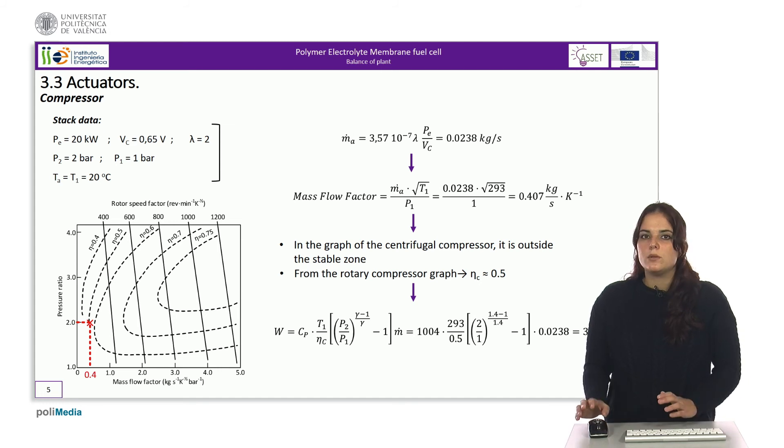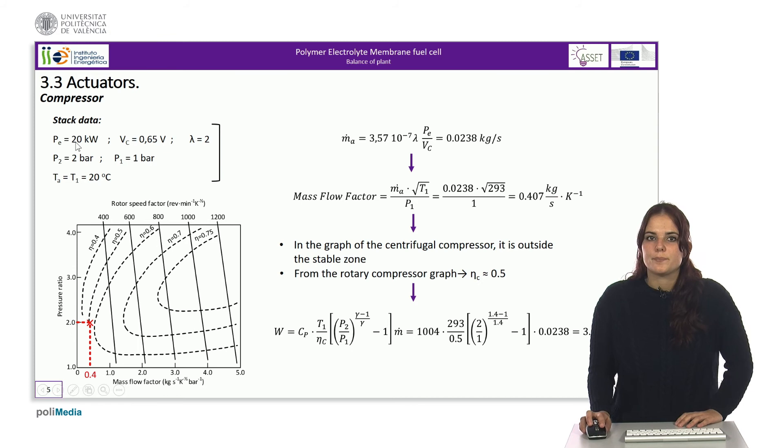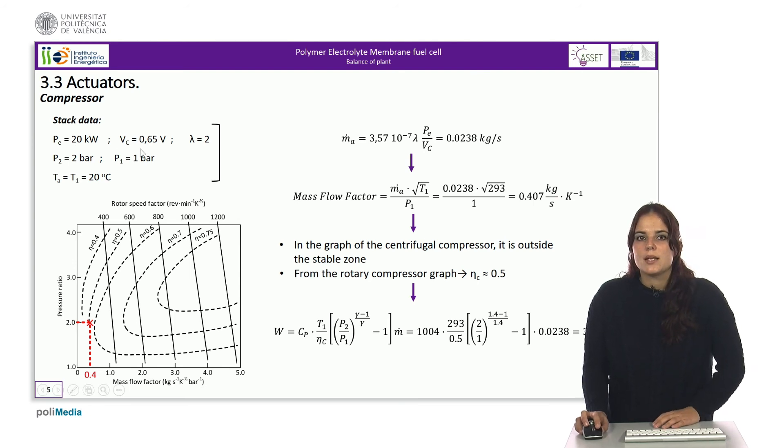First of all, we assume a fuel cell with a stack power of 20 kW. Let's suppose that we have the cells working with a voltage of 0.65 V. Since the power is maximum, the stoichiometric coefficient of the fuel is 2.